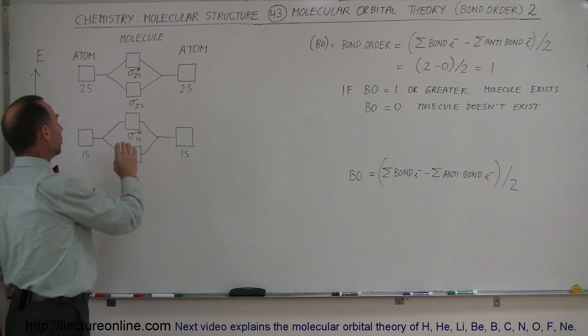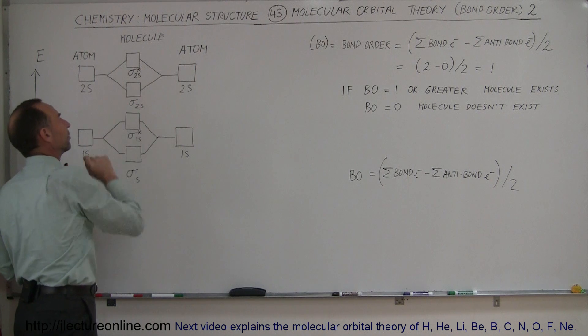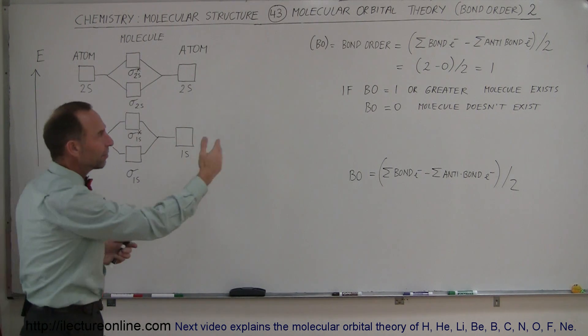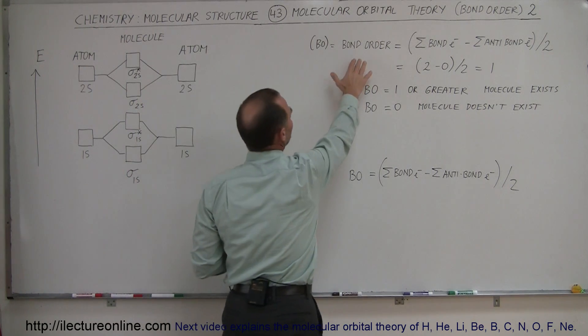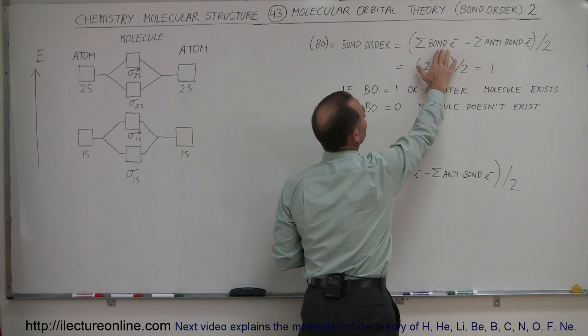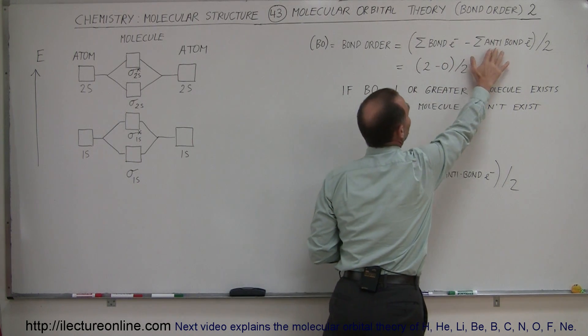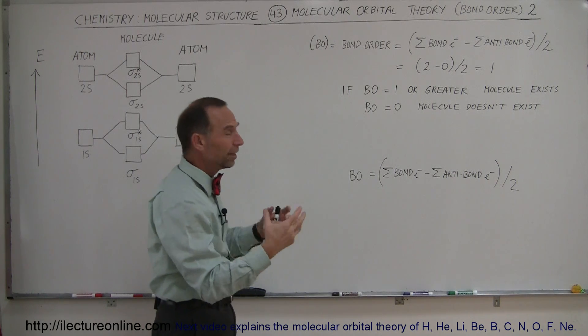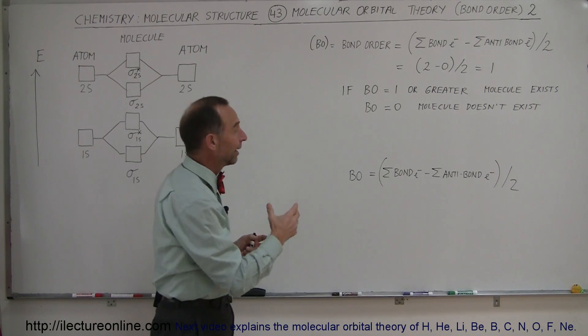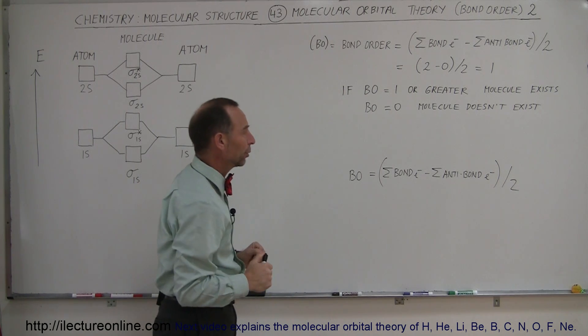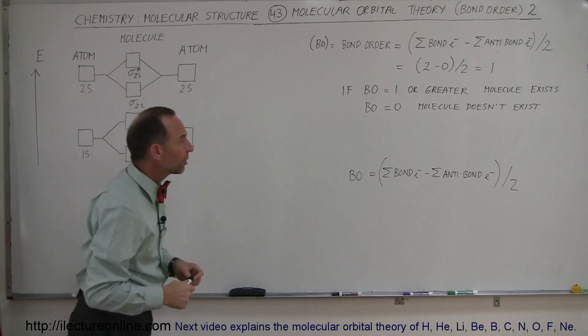But if there's more electrons in the bonds and less electrons in the anti-bonds, then the molecule can exist. In order to figure that out, we have this equation that calculates the bond order. It's simply the number of electrons involved in the bonds minus the number of electrons involved in the anti-bonds divided by two. If that number is one or greater, the molecule can pretty well exist. If the number is zero, then it's very unlikely that the molecule will exist. So let's try out for lithium and beryllium.